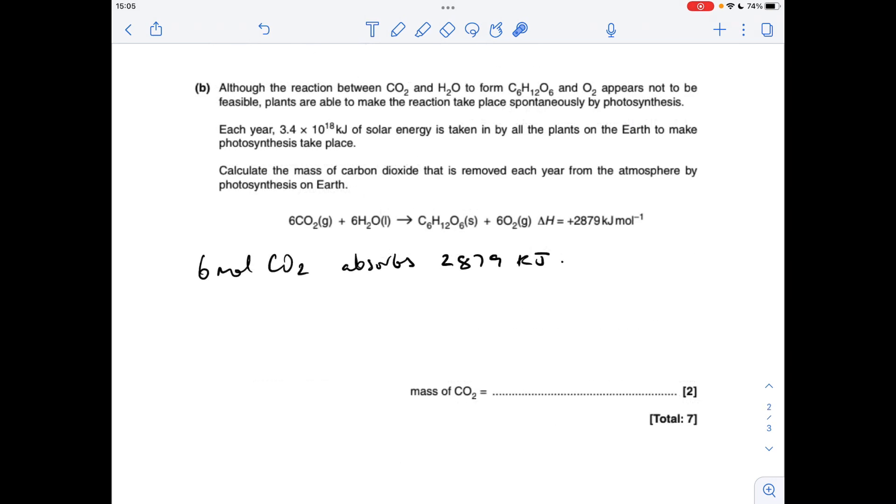So moving on to part B, I've just copied and pasted the equation for photosynthesis again, because this is telling us that six moles of CO2 absorbs that many kilojoules of energy from the sun. So if we divide that by six, we can find out what one mole of CO2 will absorb. So that's 479.83 kilojoules.